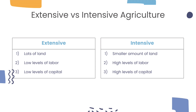On the other hand, intensive agriculture is agriculture that requires a smaller amount of land, high levels of labor, and high levels of capital. Therefore, it can be conducted in areas where land is slightly expensive, as it does not require a large amount of land, and it needs to be done close to a labor supply.